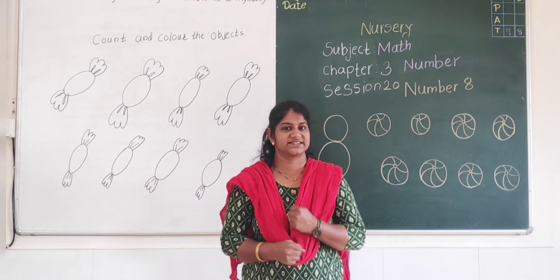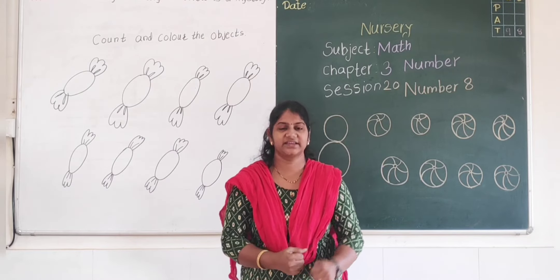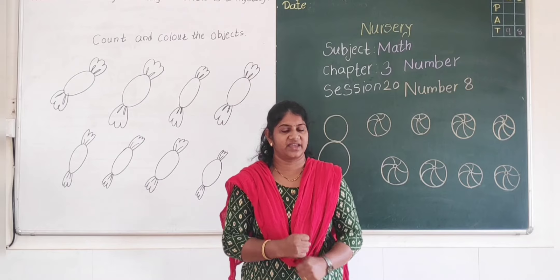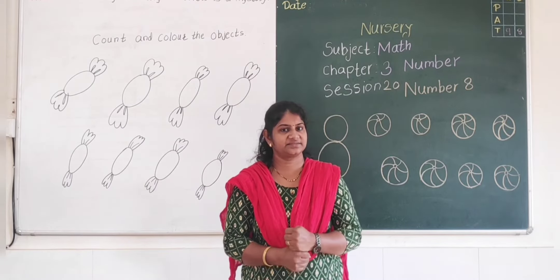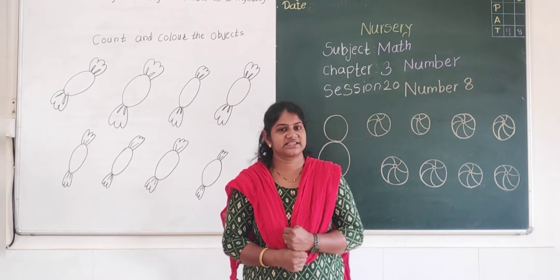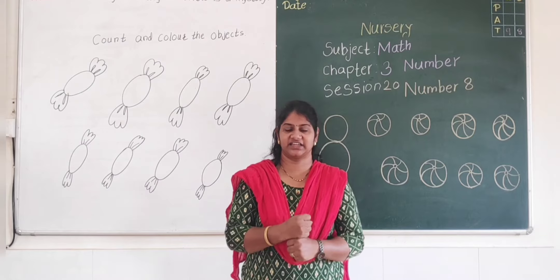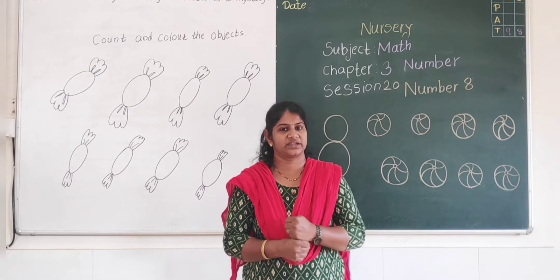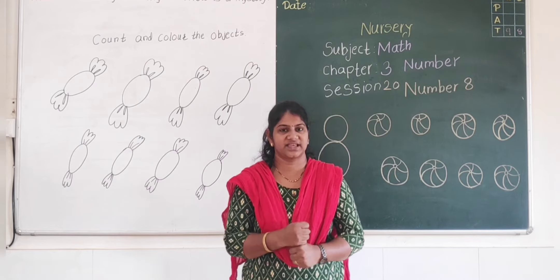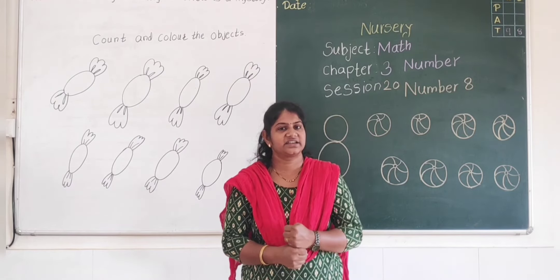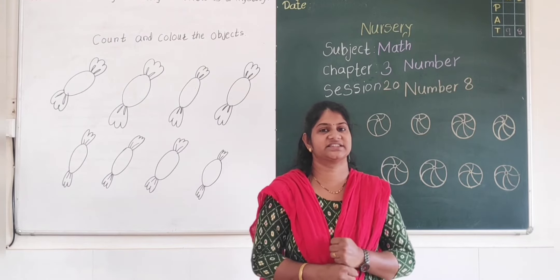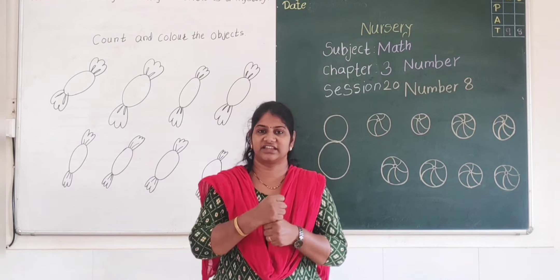Now I am going to count: 1, 2, 3, 4, 5, 6, 7, 8, 9, 10, 11, 12, 13, 14, 15, 16, 17, 18, 19, 20, 21, 22, 23, 24, 25, 26, 27, 28, 29, 30, 31, 32, 33, 34, 35, 36, 37, 38, 39, 40.